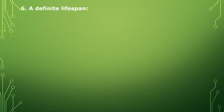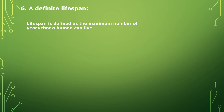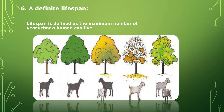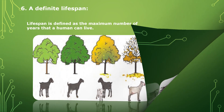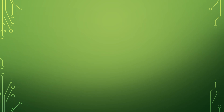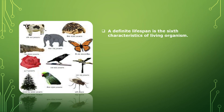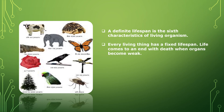A definite lifespan is the sixth characteristic of living organisms. Lifespan is defined as the maximum number of years that a living thing can live. At a certain stage of life, living things become capable of reproduction. After the reproduction stage, their organs become weak and still later their life comes to an end — in other words, living things die. Every living thing has a fixed lifespan; life comes to an end with death when organs become weak.